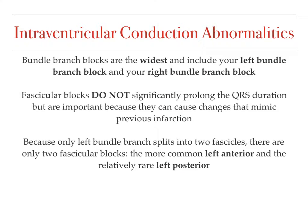The big intraventricular conduction abnormalities we always think of are left bundle branch block and right bundle branch block — these are the widest of the blocks. Fascicular blocks, which we'll talk about later, do not significantly prolong the QRS duration, but they're important to recognize because they can mimic a previous infarction. Because only the left bundle branch splits into two fascicles, there are only two fascicular blocks: the more common left anterior and the relatively rare left posterior.